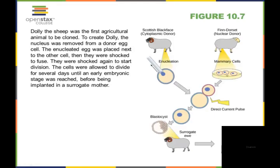Here you took those mammary cells with the nucleus and genetic information and used a direct current pulse to put it into this cytoplasmic donor. Then it became fertilized and it became the blastocyst here. Then it was implanted in a separate surrogate ewe. And then Dolly the sheep was born.